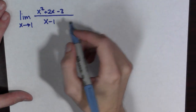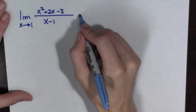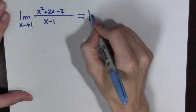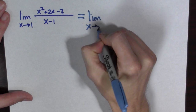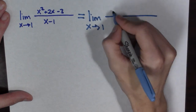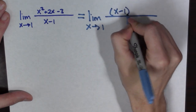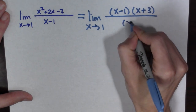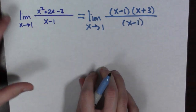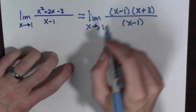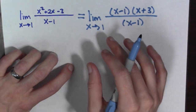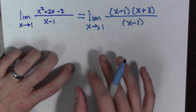In this case we factor. So to compute this limit we have to factor the numerator. We have the limit as x goes to 1 of x minus 1 times x plus 3, all over x minus 1. At this point, because we're taking the limit as x goes to 1, we're assuming that x is not equal to 1.